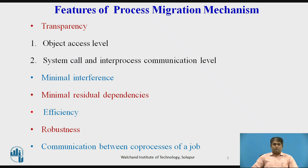Robustness: the process migration mechanism must also be robust in the sense that the failure of a node other than the one on which the process is currently running should not in any way affect the accessibility or execution of that process. Communication between co-processes of a job: one further exploitation of process migration is parallel processing among the processes of a single job distributed over several nodes. Moreover, if this facility is supported to reduce communication costs, it is also necessary that these co-processes be able to directly communicate with each other irrespective of their location.